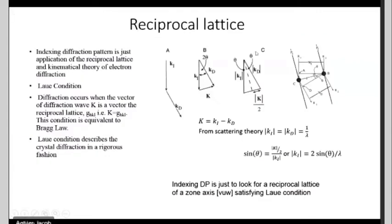In diffraction, we work in reciprocal lattice space. In this image I've shown a few examples of diffraction wave vectors. For indexing the diffraction pattern, you need to know about reciprocal lattice space. You should also know the kinematical theory of electron diffraction before entering into the indexing of diffraction patterns.